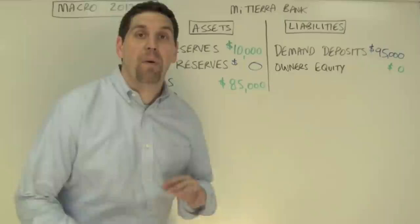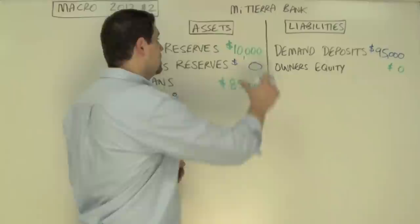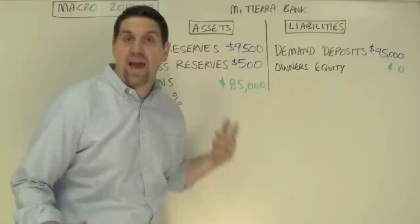Now that the demand deposits are only $95,000, not $100,000, the bank doesn't need to hold $10,000 in reserves anymore. The amount of required reserves the bank needs is actually only $9,500. The other $500 is excess reserves that the bank can now loan out. So now everything's balanced — there's $95,000 of liabilities and $95,000 of assets.